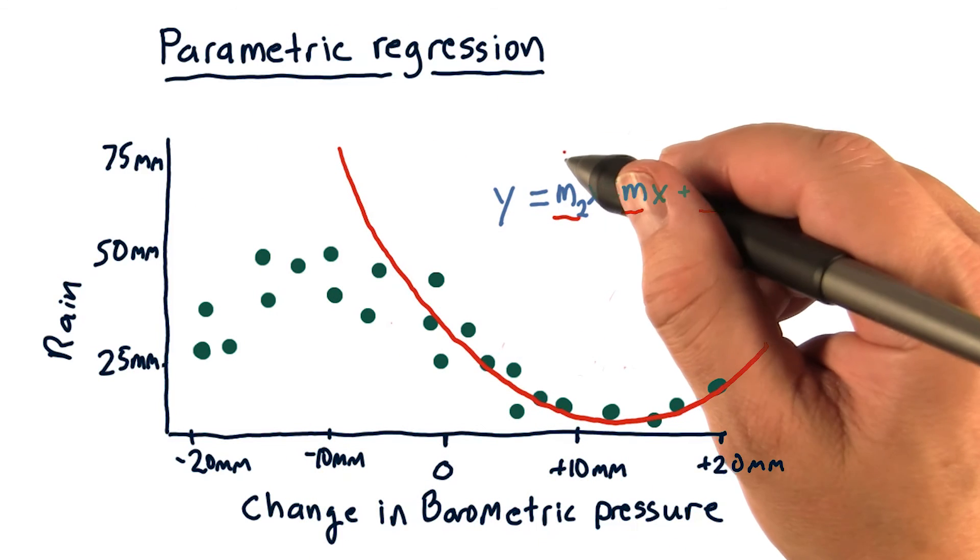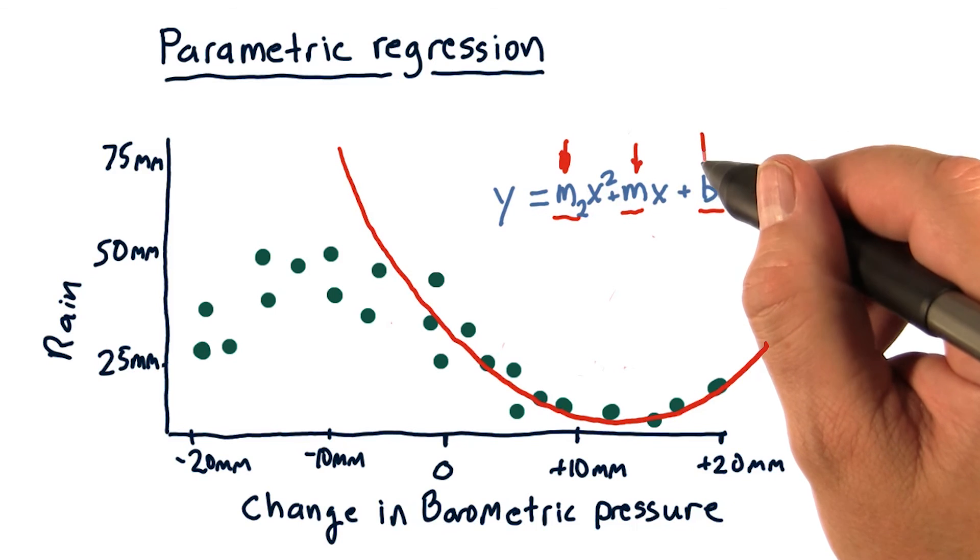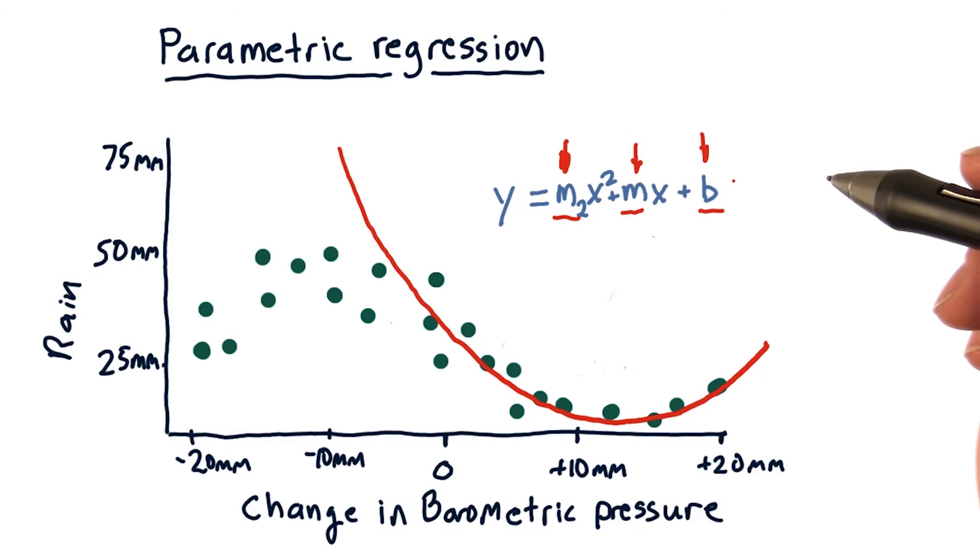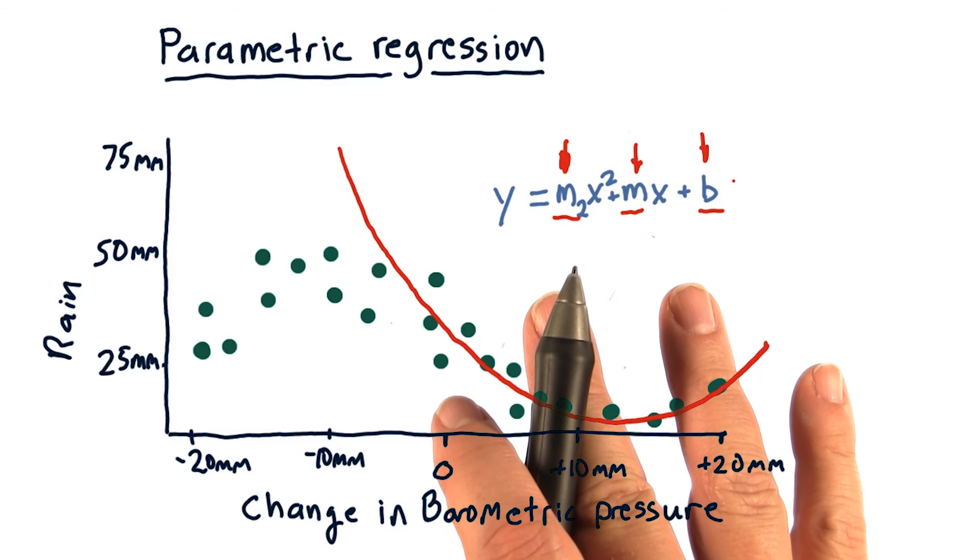In the end, after we learn these models, we have our parameters. In this case, m2, m, and b. We throw away the data, and the model is represented just by these three parameters.